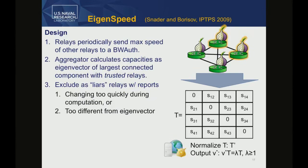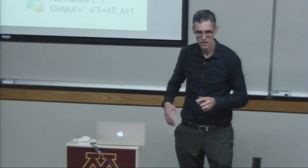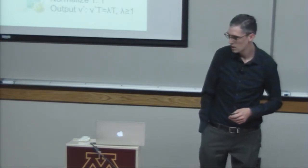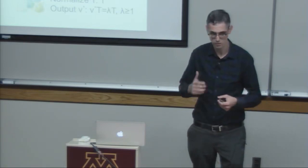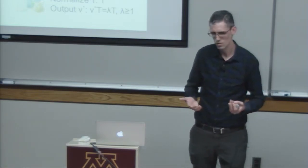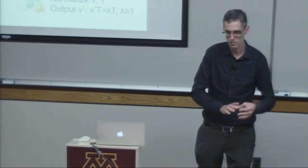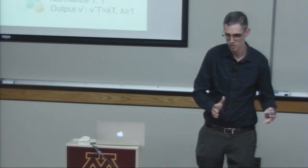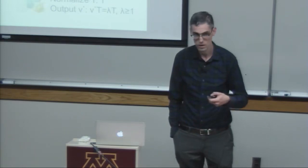EigenSpeed adds additional security features. One detects liars: during computation, if a relay's behavior changes faster than it normally should, it's flagged. Another checks if the resulting weights differ greatly from what was measured — if so, the relay is suspected of lying and essentially kicked out into a pool of 'unevaluated' relays that receive a very small fraction of the total weight.